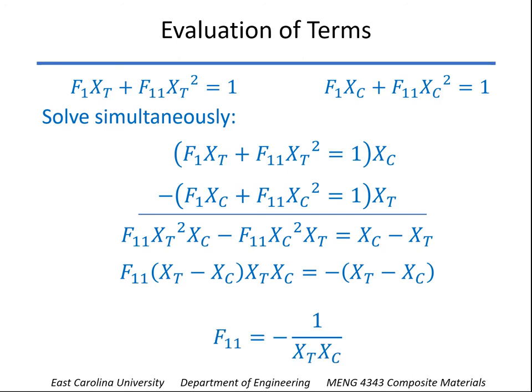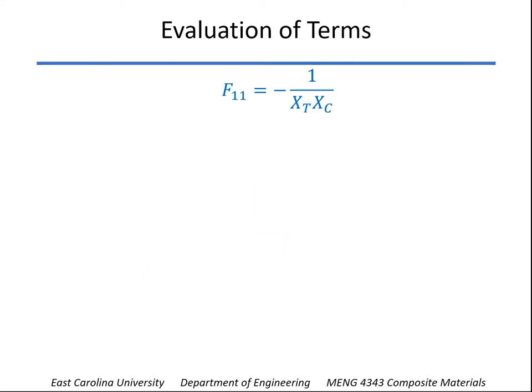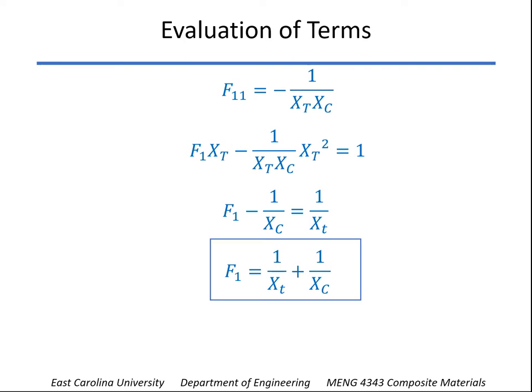Do a little bit of rearranging, and F1,1 comes out to be 1 over xt times xc. Now remember, we do put the compression strength in as a negative number, so this will be a positive value, F1,1. Now we can take that value and plug into one of the equations and solve for F1. And so F1 comes out to be 1 over xt plus 1 over xc.